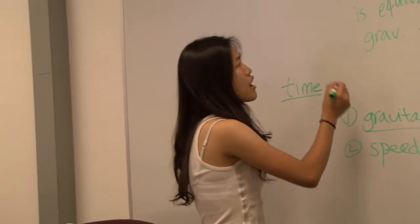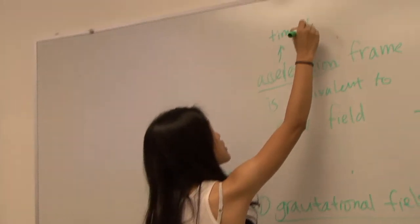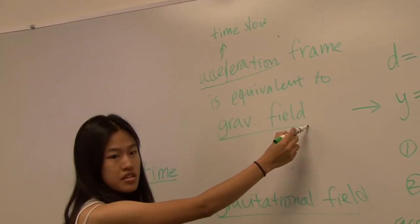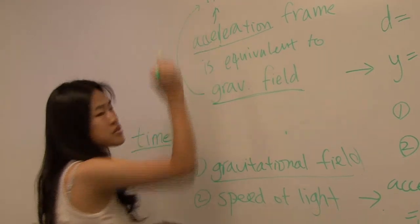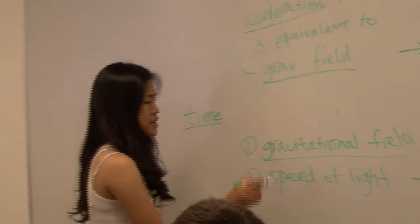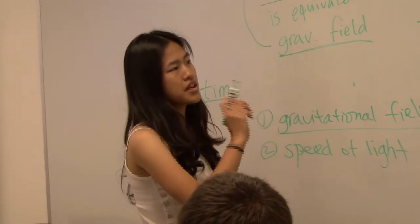Since acceleration causes time to be slow and acceleration is equal to the gravitational field, the gravitational field also makes time slow. So that's why Einstein came in and said gravitational field curves time and space.